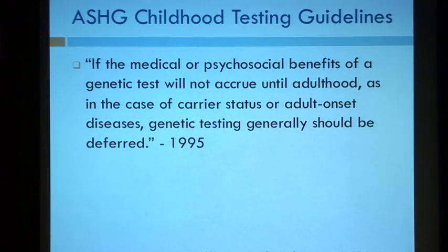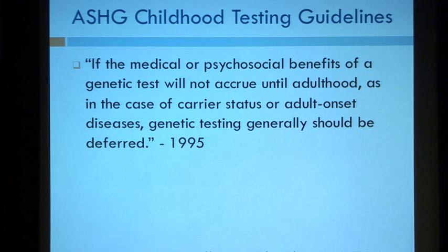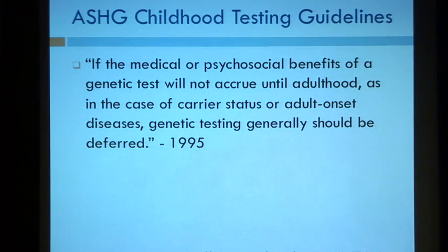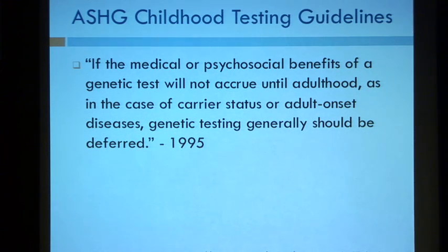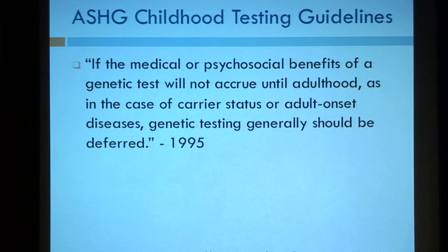In 1995, well before the age of exomes and whole genomes, the American Society of Human Genetics suggested that we should not be testing minors for disease mutations where that knowledge wasn't going to help them until they were an adult. Of course, if you're running exomes and genomes, even if you're not trying to test for BRCA1 mutations, you are by the nature of what you're doing also testing for BRCA1 or BRCA2 mutations. You need to think about this before you do these tests: what are you going to return to minor patients? Are you going to hold the results or give them back now?